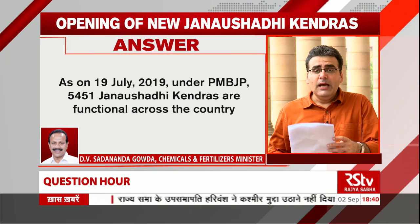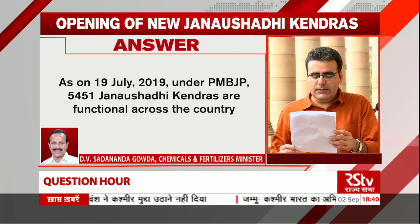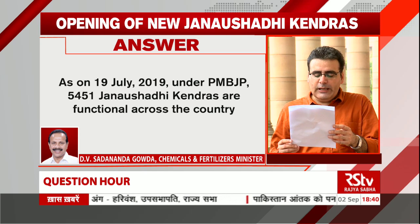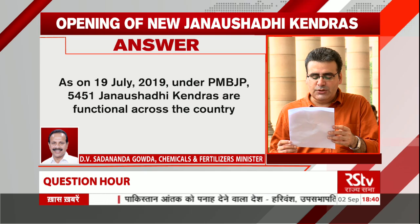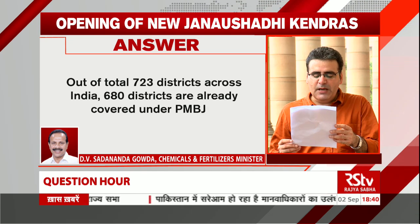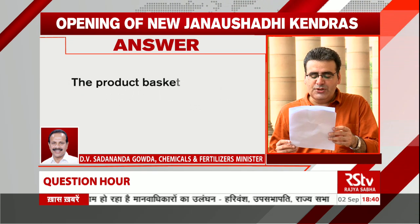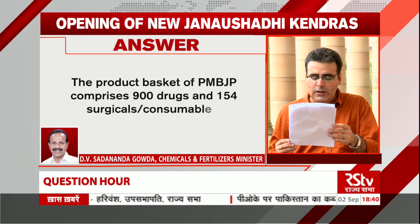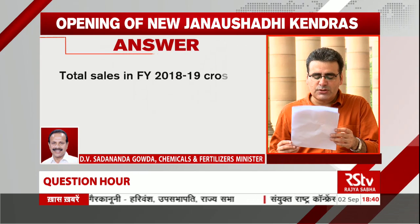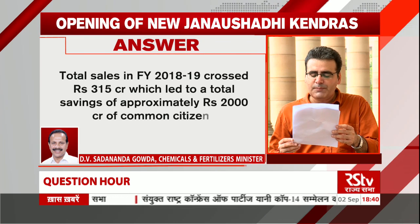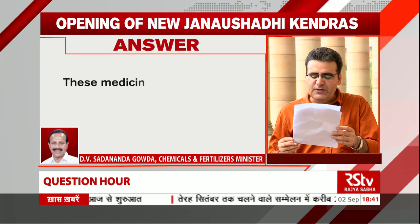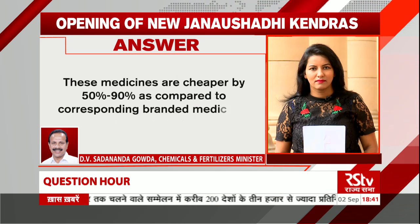As on 19th July 2019, under Pradhan Mantri Bharatiya Jan-Aushadi Pariyojana, PMBJP, 5,451 Jan-Aushadi Kendras are functional across the country. Out of the total 723 districts, 680 are already covered under PMBJP. The product basket comprises 900 drugs and 154 surgicals and consumables. Total sales in the financial year 2018-19 crossed ₹315 crore, leading to a total savings of approximately ₹2,000 crore for common citizens, as these medicines are cheaper by 50 to 90% compared to corresponding branded medicines.